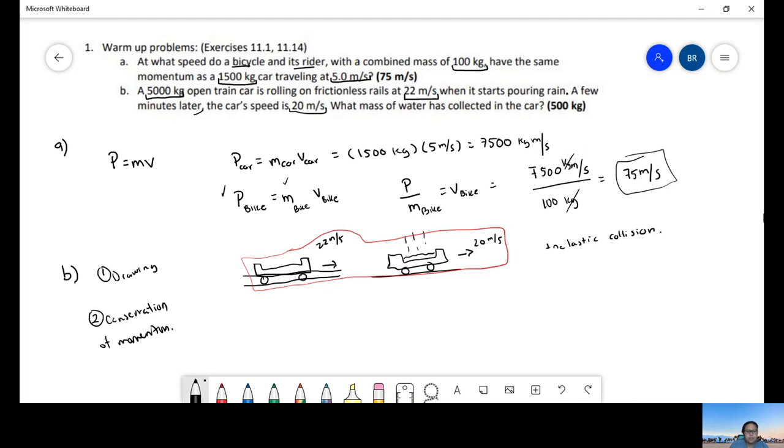We're going to have the mass of the cart times the velocity of the cart. This is the momentum at the beginning. The second momentum is the mass of the car plus the mass of the rain times velocity one.